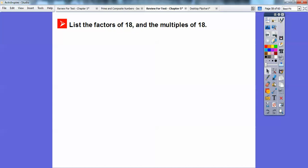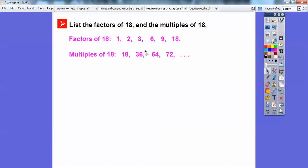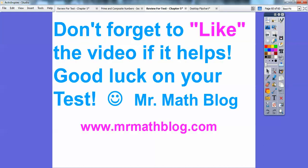List the factors of 18 and the multiples of 18. The factors of 18 are the numbers that go into 18 — what times what equals 18? So: 1 times 18, 2 times 9, 3 times 6. The multiples of 18 are 18 times 1, 18 times 2, 18 times 3, and so on. Good luck on your test, and I appreciate if you let me know how you did. Take care, everybody.